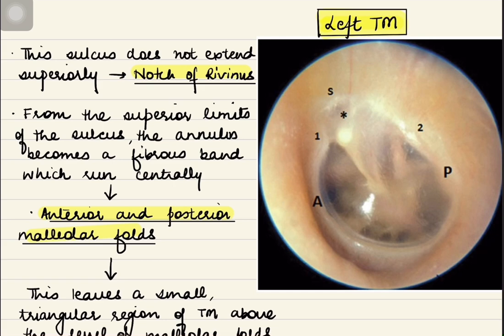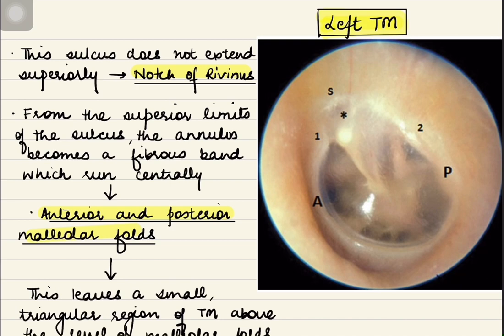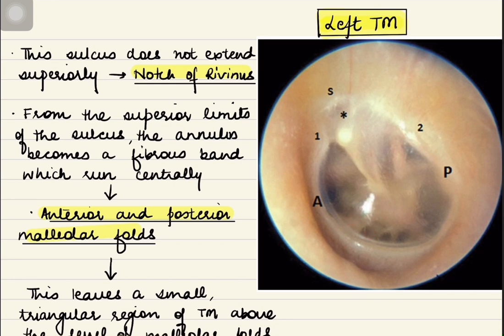Let us look at the structures visible through the tympanic membrane. This is the left tympanic membrane, and through it we can see the lateralmost ear ossicle — the malleus. The handle of malleus is visible, and if we look carefully we can also see a glimpse of the incus and the head of stapes, with the incudostapedial joint. There is a cone of light in the anteroinferior compartment, and we can also see the shadow of the Eustachian tube opening.